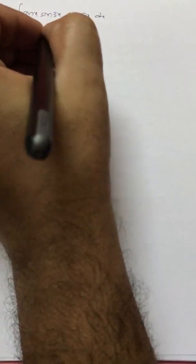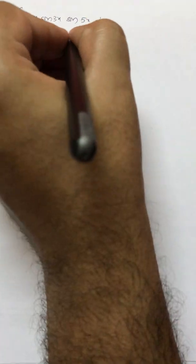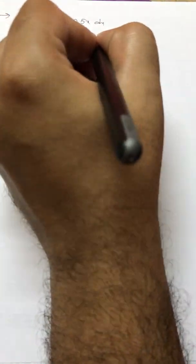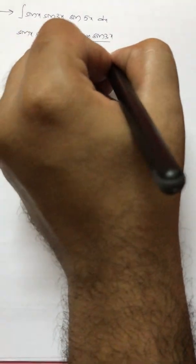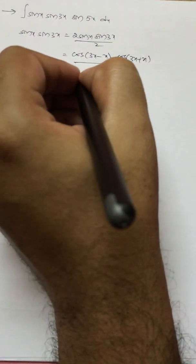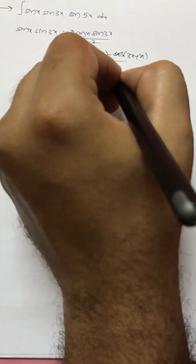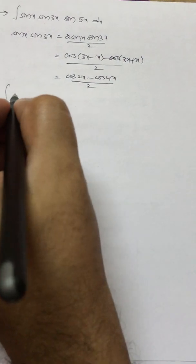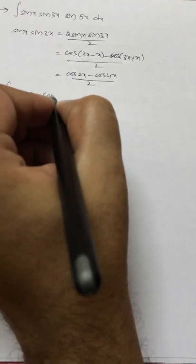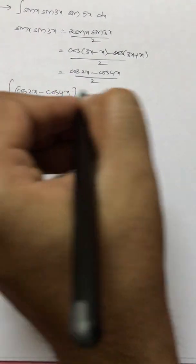Let's select sin x sin 3x, so 2 sin x sin 3x by 2. This is nothing but cos(3x - x) minus cos(3x + x) by 2, which equals cos 2x minus cos 4x by 2.